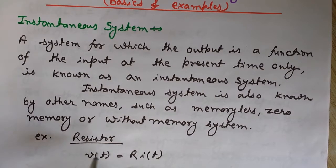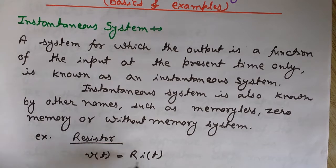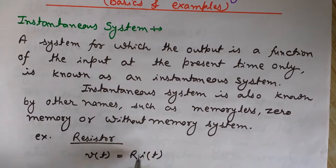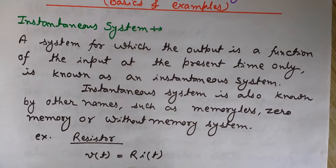One very common and simple example of an instantaneous system is a resistor, because a resistor's equation is given by Ohm's law: V(t) = R·i(t). So the voltage at any time is equal to the resistance multiplied by the current flowing at that instant of time at which we want to calculate the voltage. This is an instantaneous, memory-less system. We will see later that a capacitor is a dynamic system — it has memory.